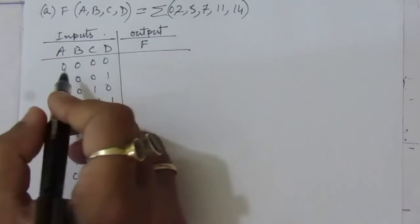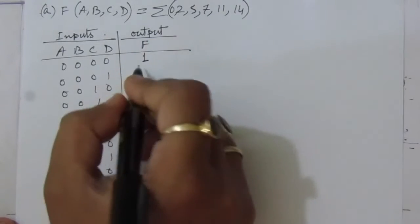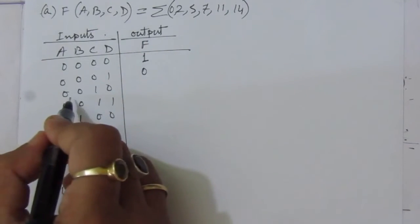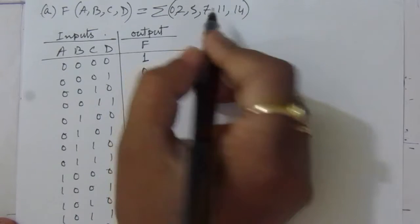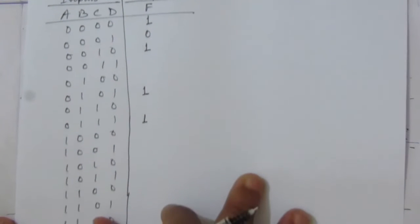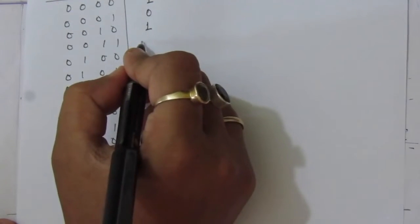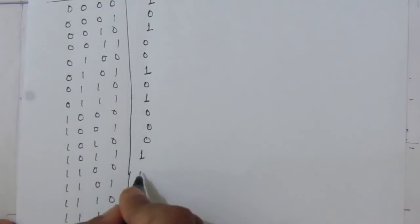Minterm 0 is present so output is 1. Minterm 1 is absent so output is 0. Minterm 2 is present, so output is 1. The present minterms are 0, 2, 5, 7, 11, and 14 — these give output 1. All others — minterms 1, 3, 4, 6, 8, 9, 10, 12, 13, 15 — give output 0.